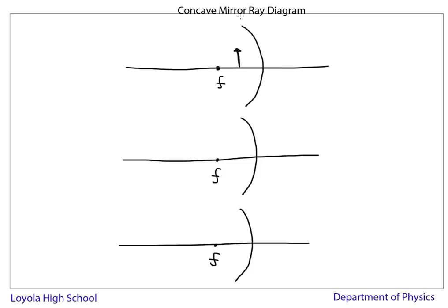So you have to draw two rays to determine where the image is. The first one is a light ray that's parallel to the principal axis. And this line right here, P, is called the principal axis. It's the axis that goes to the focal point and goes right to the mirror at the diameter of the mirror.